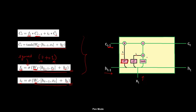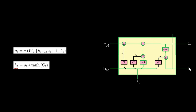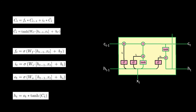Now for the third gate, the output gate. The hidden state ht is computed by multiplying the output gate ot with tanh(ct). This hidden state is provided as an output to make the prediction. The output gate equation is similar to the forget and input gate equations, with weight W_o and bias b_o. The output gate filters what information should be given as output and what information should not.